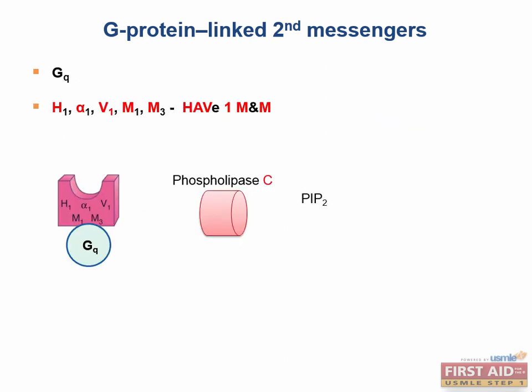Now let's talk about the signaling cascades for the various G proteins. The mnemonic just given separated all of these receptors into different classes. Let's categorize these receptors a different way before exploring how each class — GS, GI, and GQ — functions.